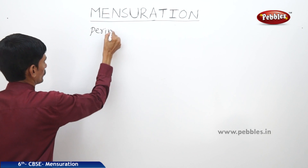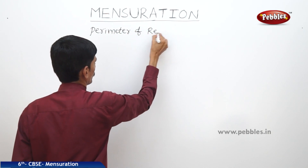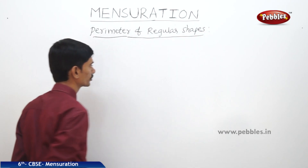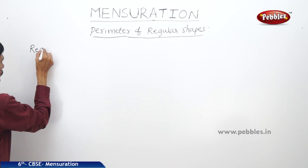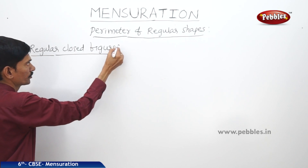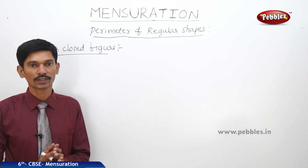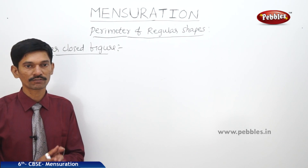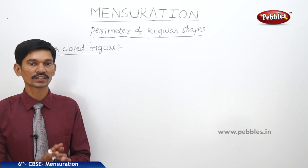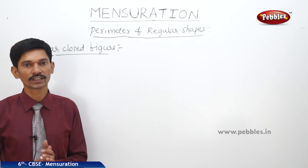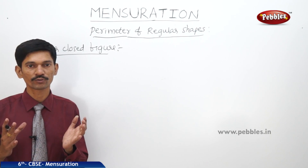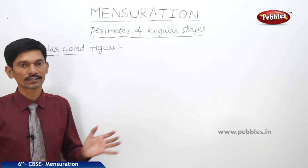Now let us find the perimeter of regular shapes. A regular closed figure is one in which all sides and all angles are equal. For example, an equilateral triangle has three equal sides and three equal angles, so it is a regular closed figure. A square, which is a four-sided figure with all four sides and four angles equal, is also a regular closed figure.